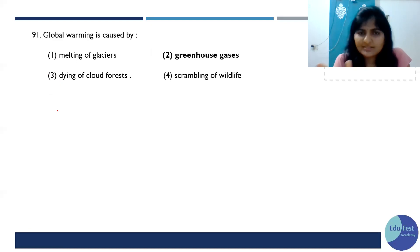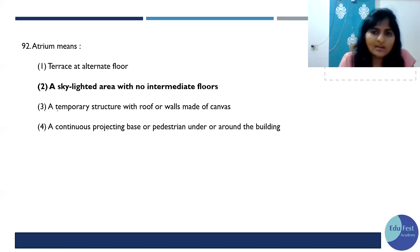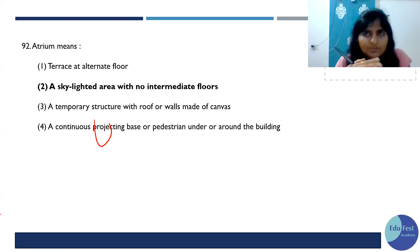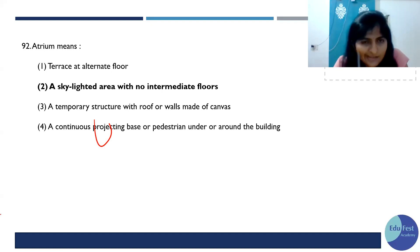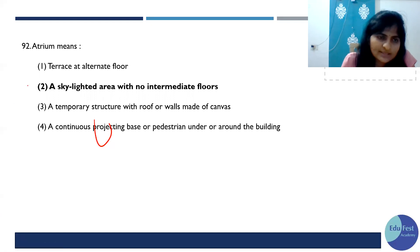Global warming is caused by greenhouse gases — a very easy question. Atrium means: you will find this in the UDCPR. Atrium is a skylighted area — completely open to sky, with no floor in between, fully height-ed and skylighted. That area is known as atrium. So yes, the answer is B.